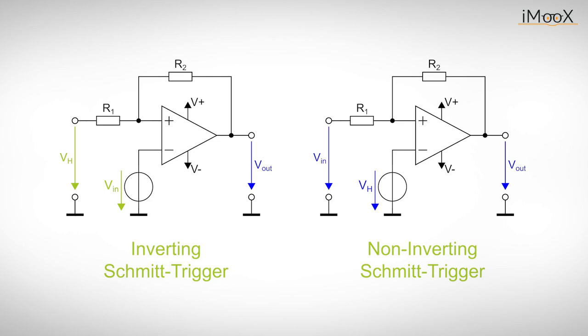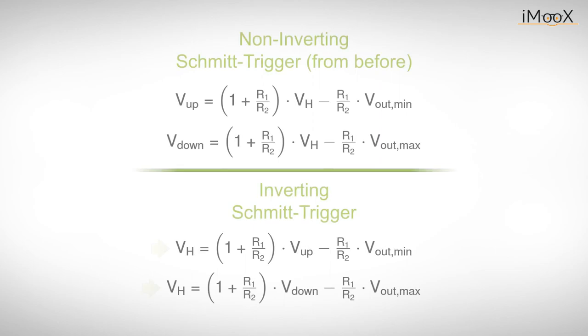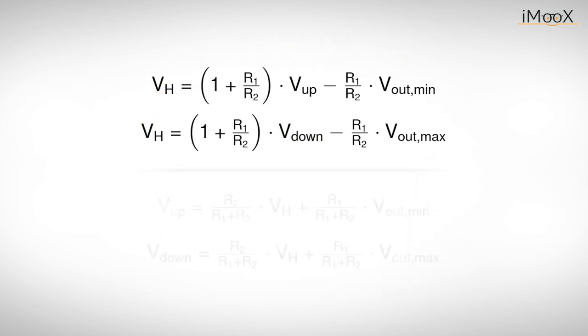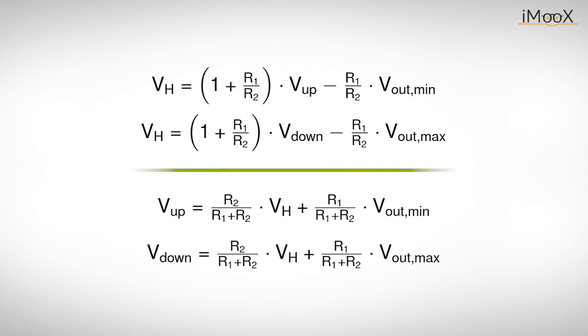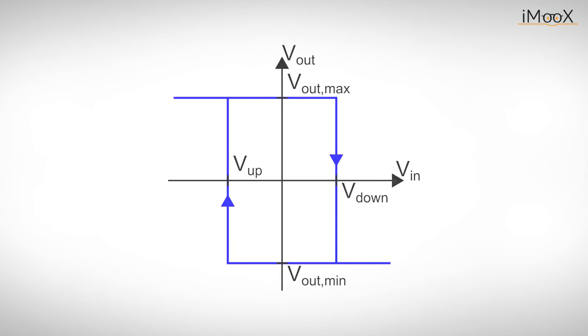Of course we have to repeat this process for the equations from above. So for each of the two equations we swap Vh with either Vup or Vdown. We solve again for the trigger levels to finish the inverting Schmitt trigger. And we could also plot the transfer function of the inverting Schmitt trigger.